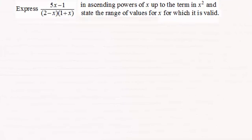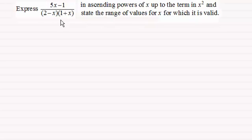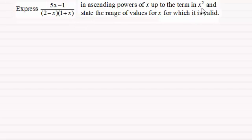In this video, what I want to do is show you how we can take an algebraic fraction and, by using the binomial expansion, rewrite it as a series in ascending powers of x. To demonstrate this, we've got this example where we've got to express 5x minus 1 all divided by 2 minus x times 1 plus x in ascending powers of x up to the term in x squared, and state the range of values for x for which it is valid.